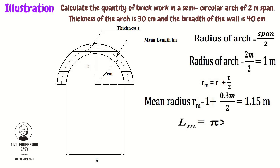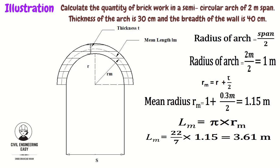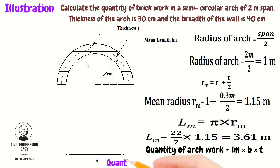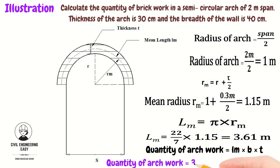Finally, calculate the mean length, which is equal to π times the mean radius. Putting in the value: 22/7 multiplied by 1.15, the mean length is equal to 3.61 meters. The quantity of arch masonry is equal to mean length multiplied by width multiplied by thickness: 3.61 × 0.4 × 0.3. The total quantity of masonry in the semicircular arch is equal to 0.433 cubic meters.